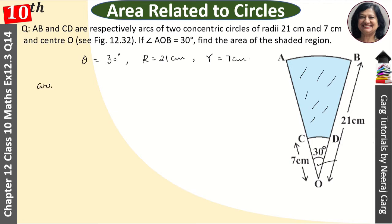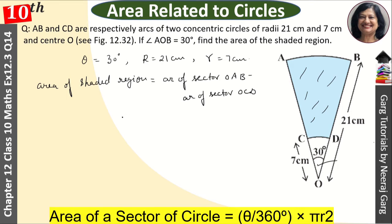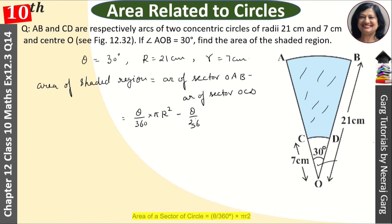Area of shaded region equals area of sector OAB minus area of sector OCD. The formula for area of a sector is theta upon 360 into pi r squared. We take theta upon 360 into pi as common, giving us the bracket R squared minus r squared.